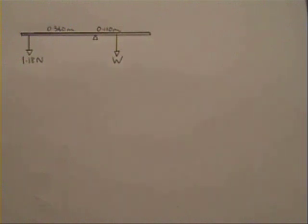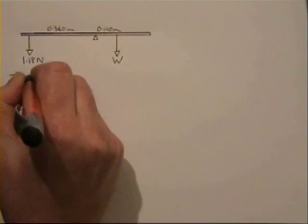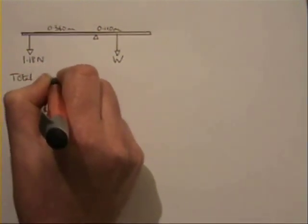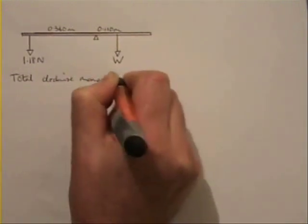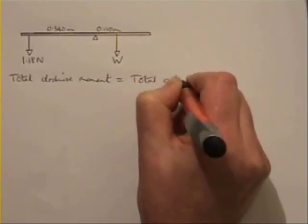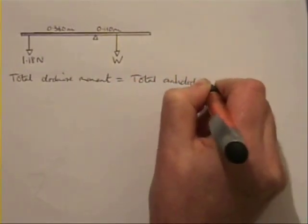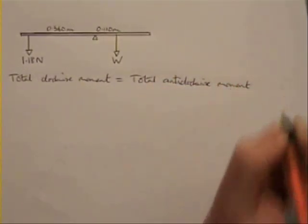And now we're able to calculate the value for W. So we know we have a situation that's in equilibrium, so we know we can use the principle of moments. And it's worth writing it down. Total clockwise moment equals total anticlockwise moment.